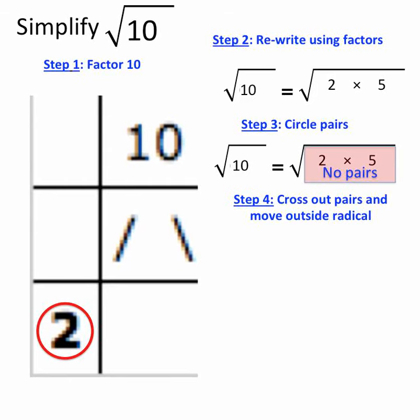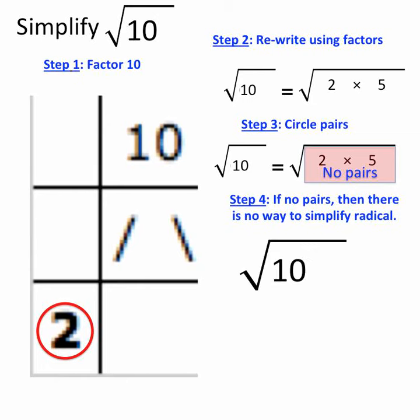My next step is to cross out the pairs and move outside the radical. But as we just said, there are no pairs to move outside the radical. So if there are no pairs, then there's no way to simplify the radical. So root 10 simply remains root 10. There's no way to simplify it further. That is my answer.